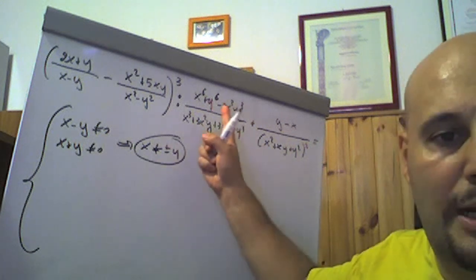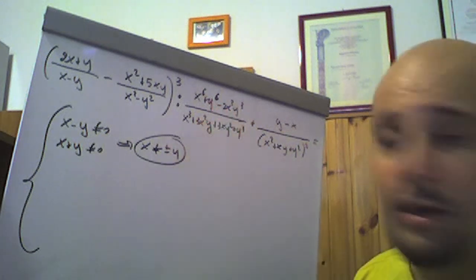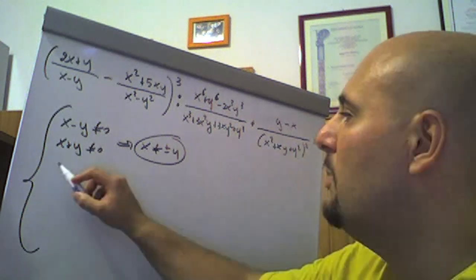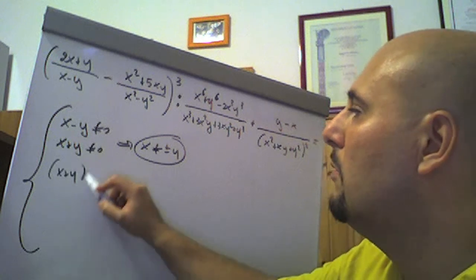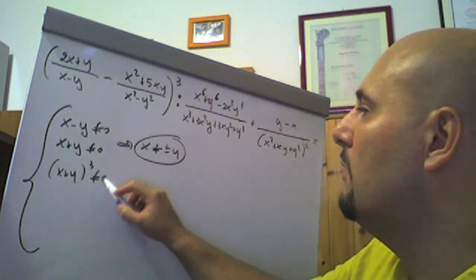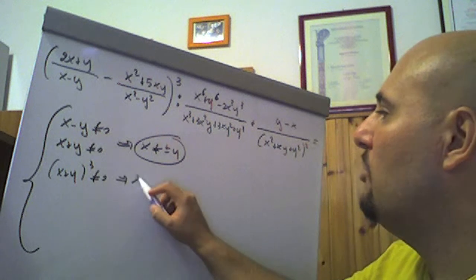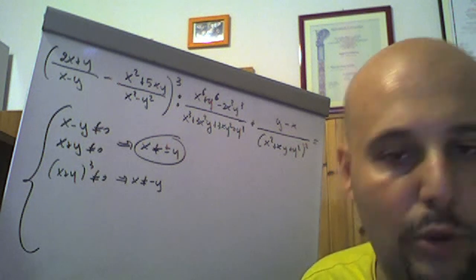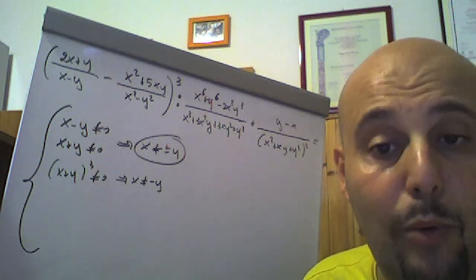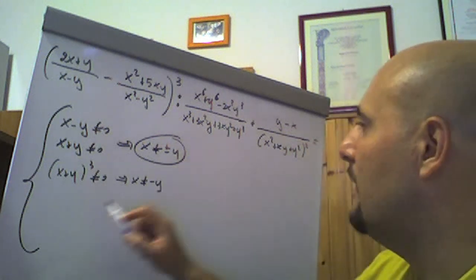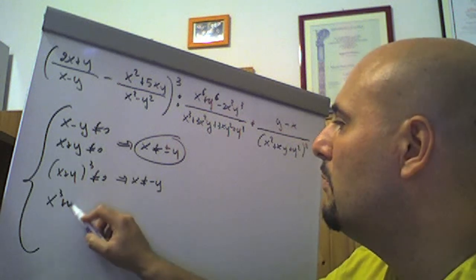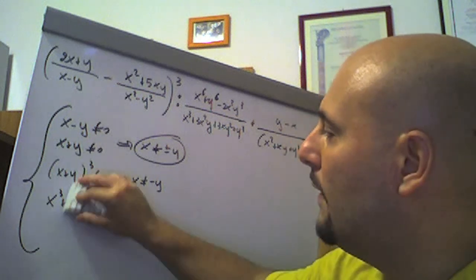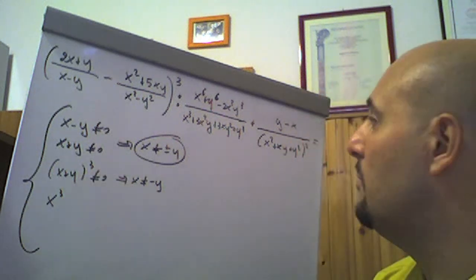Dobbiamo porre sia il numeratore che il denominatore di questa frazione algebrica. Il denominatore è uno sviluppo di un cubo di un binomio: di (x più y) al cubo, che deve essere diverso da 0, quindi x diverso da meno y, l'abbiamo già messo. Che cos'è x alla sesta più y alla sesta meno 2x cubo y cubo? È lo sviluppo del quadrato di un binomio, in particolare di (x al cubo meno y cubo) al quadrato. Dico meno perché c'è quel meno 2x cubo y cubo. Va posto diverso da 0.